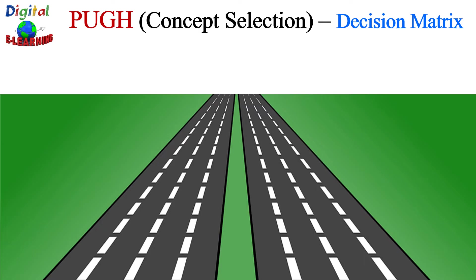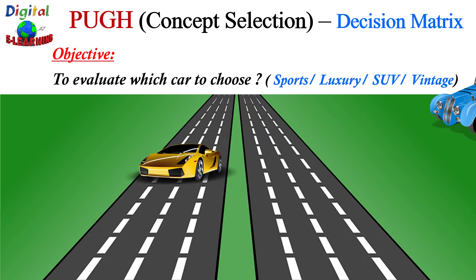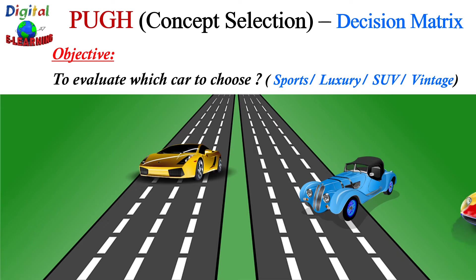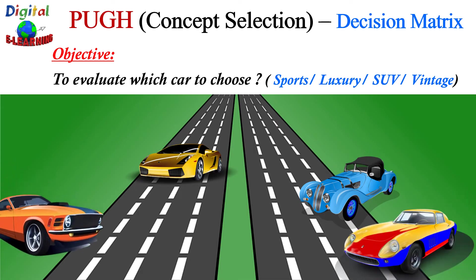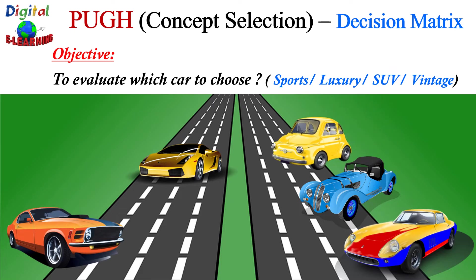Let's take an example. Suppose our objective is to evaluate which car to choose out of a sports car, a luxury car, an SUV, or a vintage car. We will use the Pugh concept matrix technique to determine which car to choose based on certain criteria.